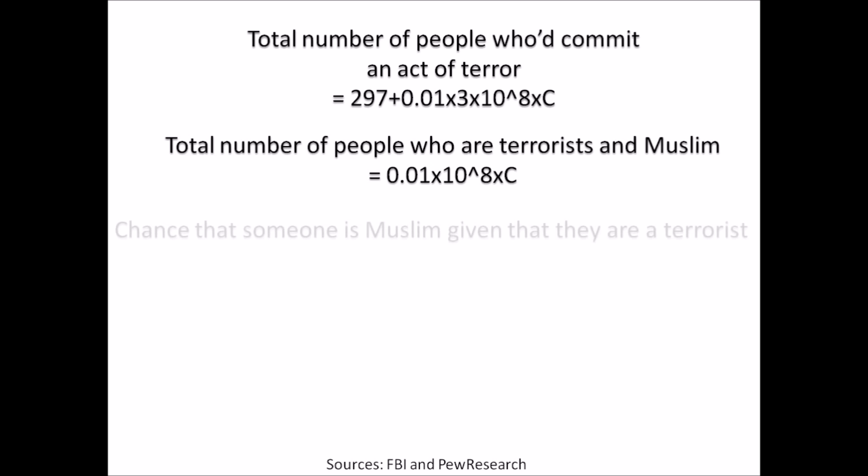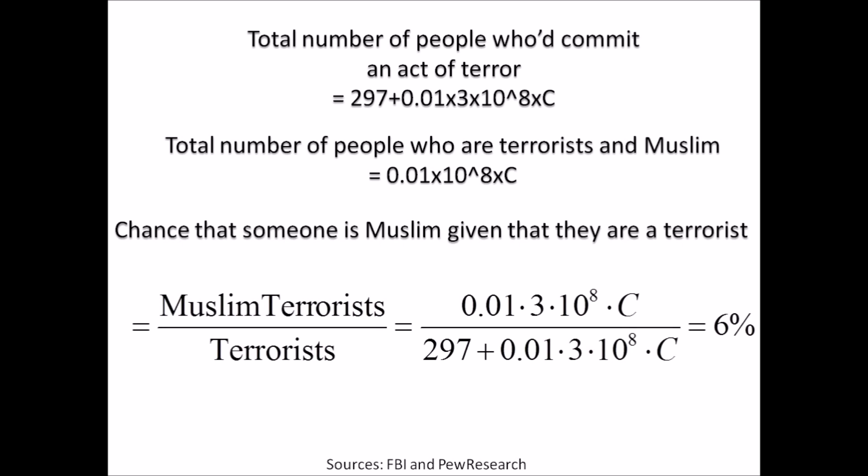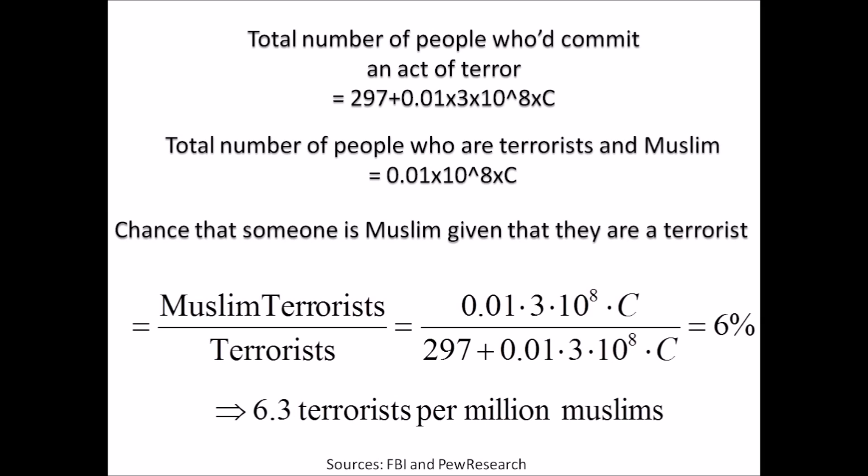So now we can calculate the chance that someone is Muslim given that they are a terrorist. Doing the calculations, we see that we get Muslim terrorists over the total number of terrorists, and we get a number. Then, according to the FBI, about 6% of terrorist attacks are committed by Muslims. So equating these two expressions, we get the left-hand side equal to the right-hand side, which implies that about 6.3 terrorists exist per million Muslims. Now this is higher than the number of non-Muslim terrorists per million non-Muslims, except both probabilities here are very small. To put that in perspective, we can use the above to calculate that there are about 19 Muslim terrorists in the US, compared to the 297 non-Muslim terrorists also living in the states.